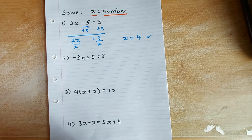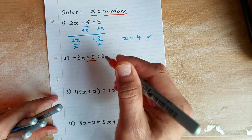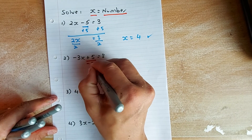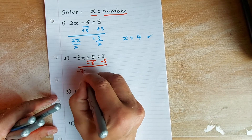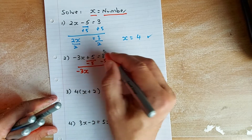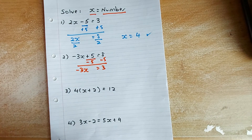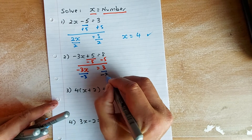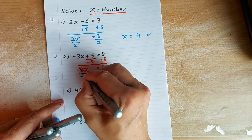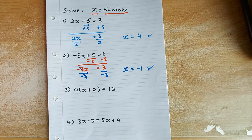Same example, different numbers. 5 is an intruder so minus 5 on both sides. What's left is minus 3x, and 8 minus 5 is 3. To get rid of the minus 3, divide by minus 3 on both sides — they cancel out. So x equals negative 1.